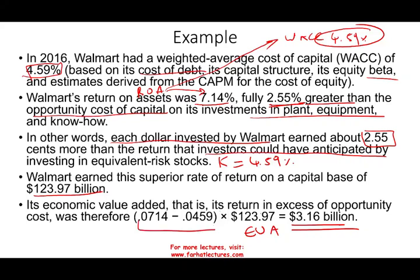EVA is a dollar amount, not a percentage. It's the return in excess of the opportunity cost — the difference between ROA and K or WACC, the required rate of return, multiplied by the assets. That's the formula we use in this course.